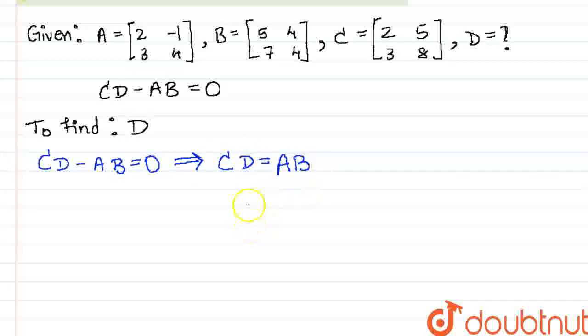Now, for calculating what the matrix AB is, that will be equal to 2, negative 1, 3, 4, times 5, 4, 7, 4. That will be equal to 10 minus 7, which is 3, 8 minus 4, which is 4,